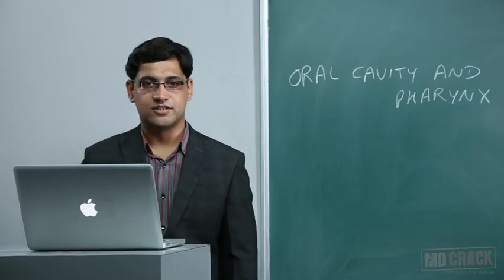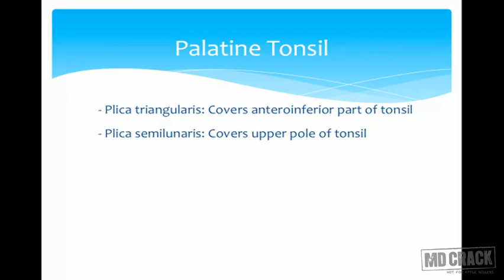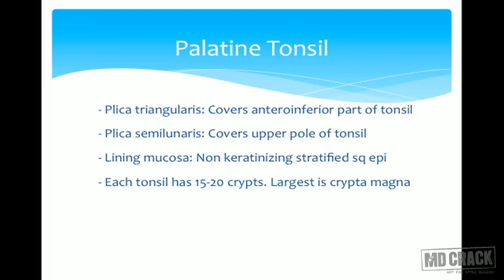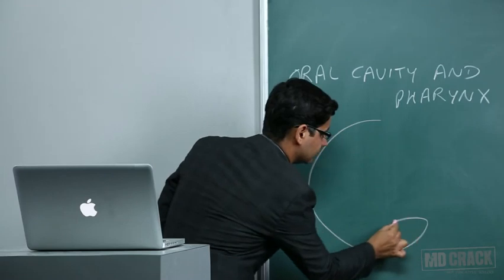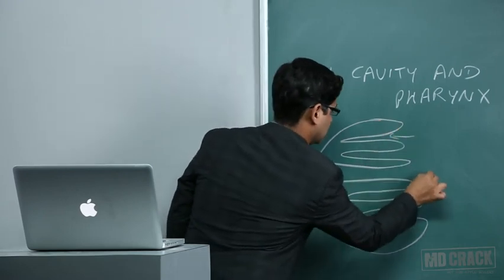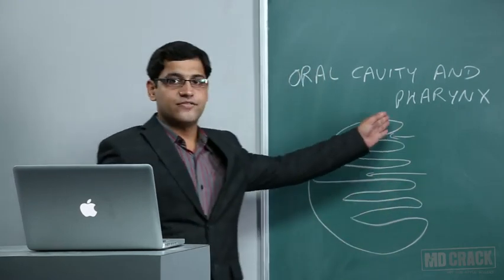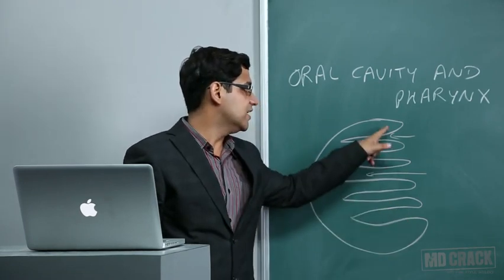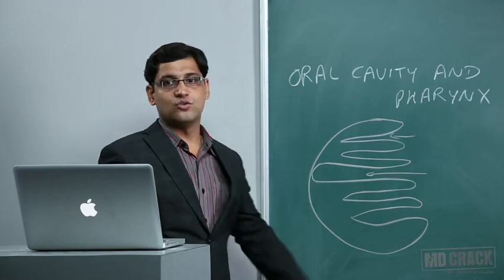The palatine tonsils have two mucosal folds: plica triangularis, which covers the anterior inferior part, and plica semilunaris, which covers the upper pole. The lining mucosa is non-keratinizing stratified squamous epithelium. Each tonsil has around 15 to 20 crypts visible on the medial surface.